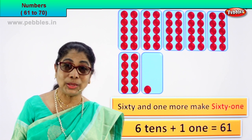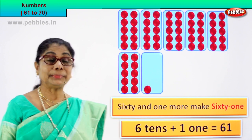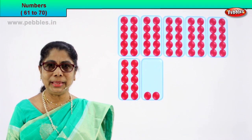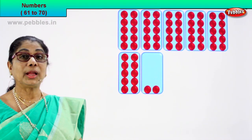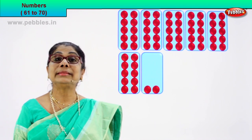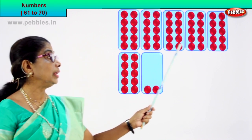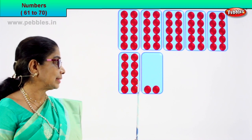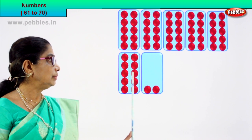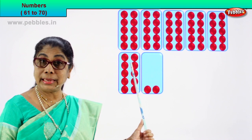Shall we take our next number? We are learning to count. Let's count the next number. Let's count the number of boxes. In each box there are ten red circles. One, two, three, four, five. Let's count six. Let's count this last box. One, two, three, four, five, six, seven, eight, nine, ten. In one box there are ten circles.